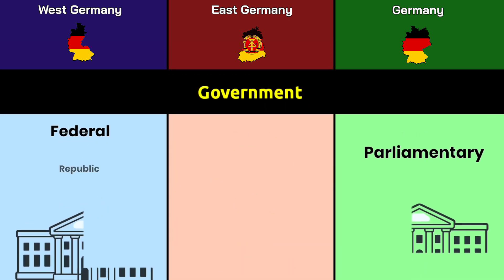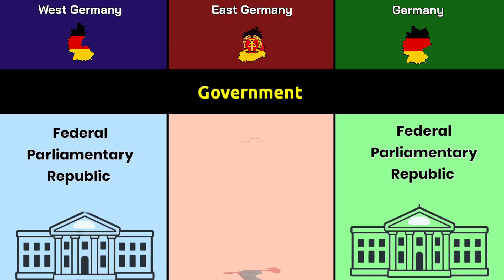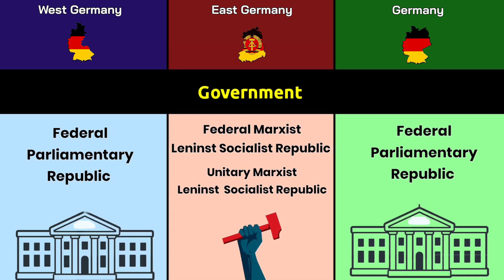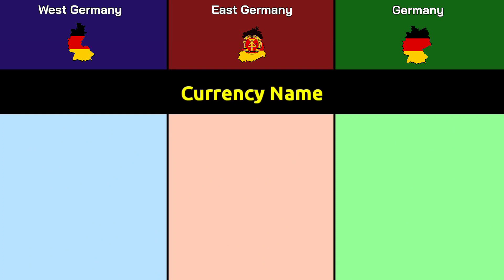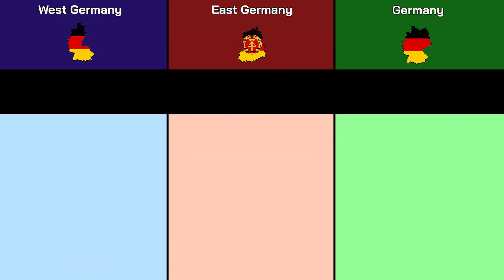Government: West Germany and modern Germany are both Federal Parliamentary Republics. East Germany was a Federal Marxist-Leninist Socialist Republic, later described as a Unitary Marxist-Leninist Socialist Republic. Currency: West Germany used the Deutsche Mark, East Germany used the East German Mark, and modern Germany uses the Euro.